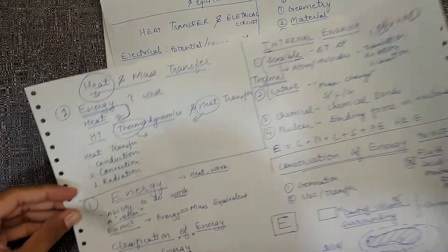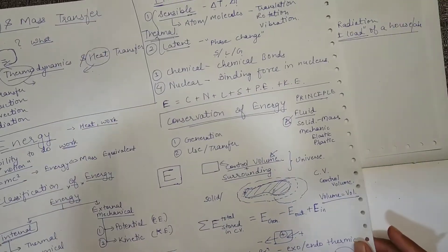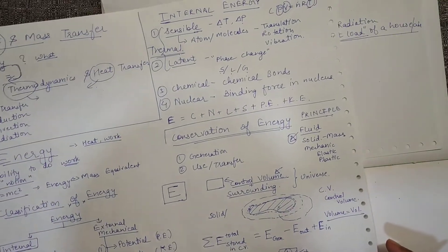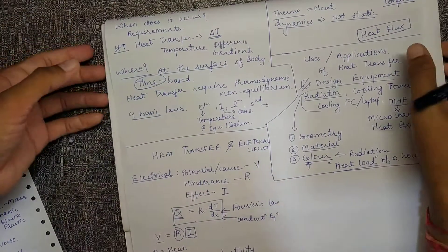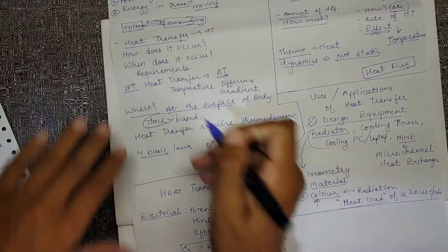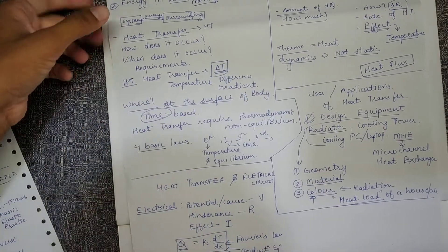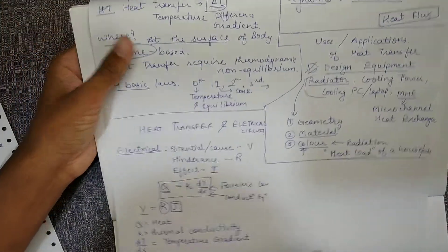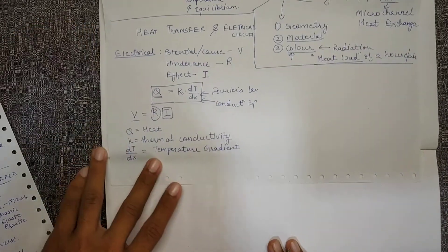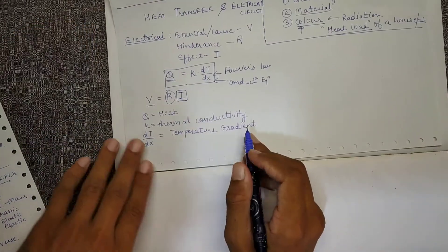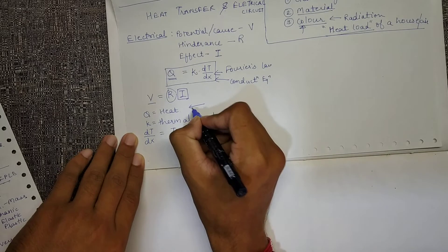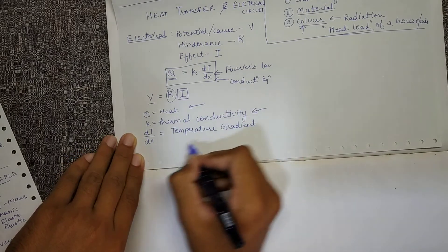Heat transfer requires a temperature gradient. That's the driving force for it. For current to move, the driving force is the potential difference. Here the heat is involved, thermal conductivity is involved, and temperature gradient is involved.